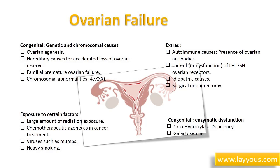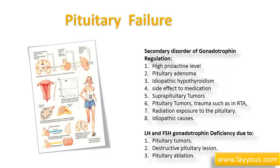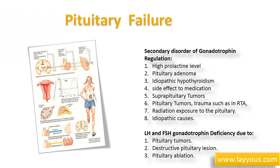Pituitary failure is a secondary disorder of gonadotrophin regulation. Causes include hyperprolactin levels due to pituitary adenoma, idiopathic causes, or hypothyroidism, or as a side effect to medication, which affects follicular maturation. Suprapituitary tumors, pituitary tumors, trauma such as in road traffic accidents, radiation exposure to the pituitary, and idiopathic causes are all recognized contributors.